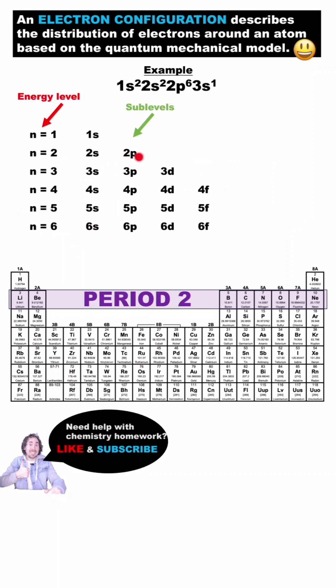Every energy level has an S sublevel, but then you add another sublevel each time you move up in energy. Sublevels have a certain maximum number of electrons. S can hold 2, P can hold 6, D can hold 10, and F14.